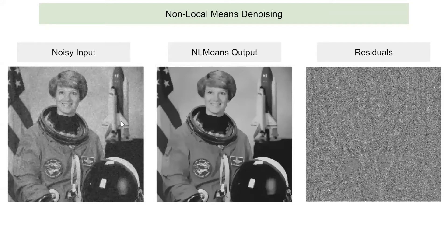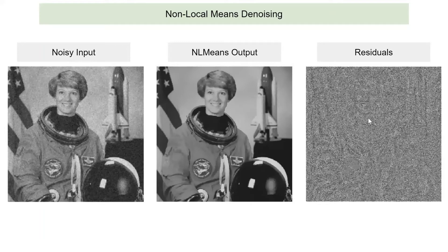This is the general 2D case showing how non-local means works. It's quite good. You can still see some structure in the residual of the noise removed from the image. You have to play around with the parameters of the algorithm quite a bit, but it does work quite well. There is some structure removed, but it still does a very good job.